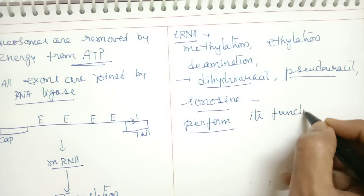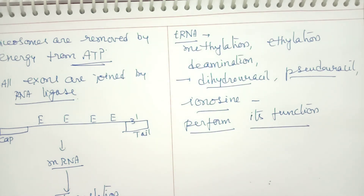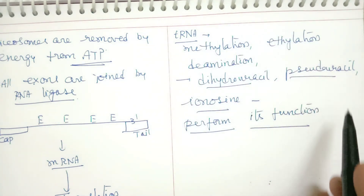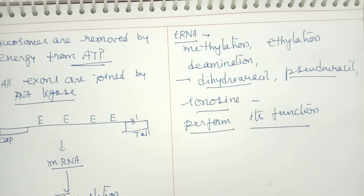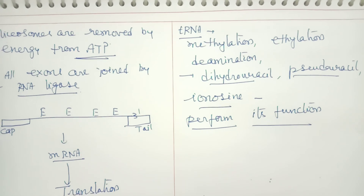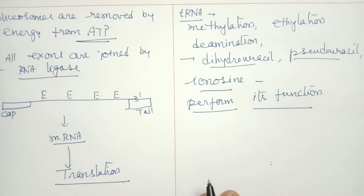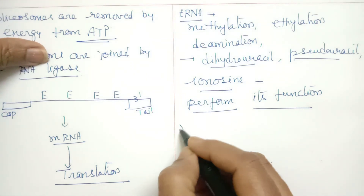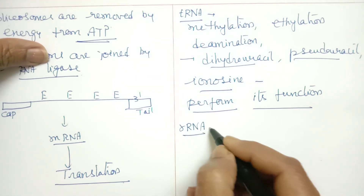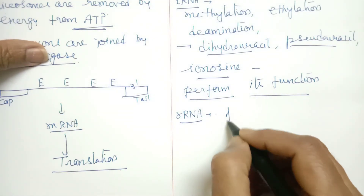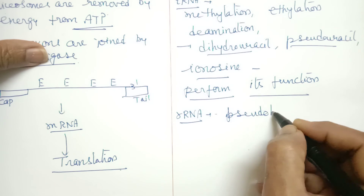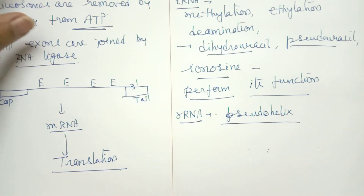rRNA also undergoes modifications immediately after its synthesis. The modifications of rRNA are simpler — rRNA simply forms a pseudohelix after formation and gets accommodated in the ribosomes, forming the structure of ribosomes.